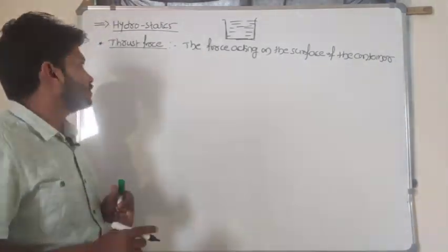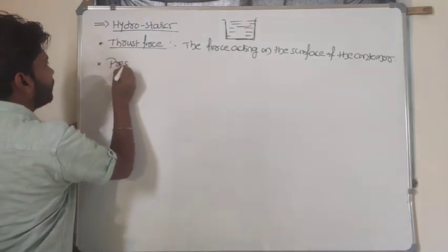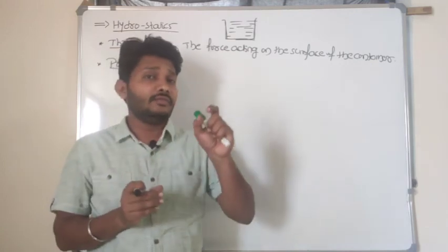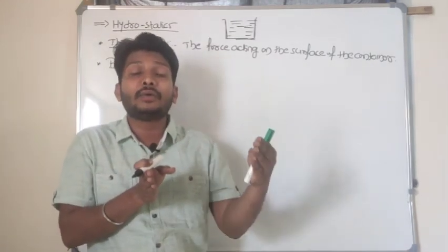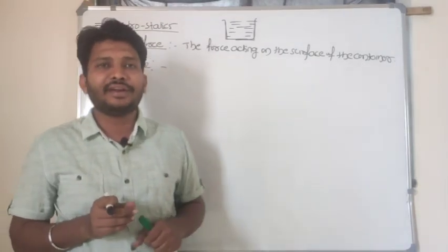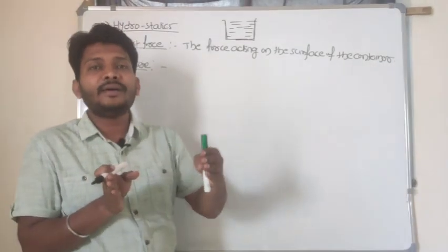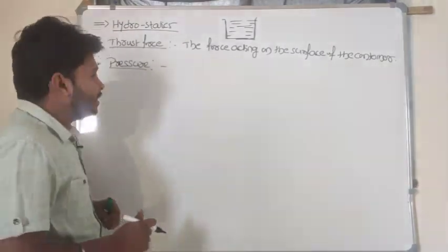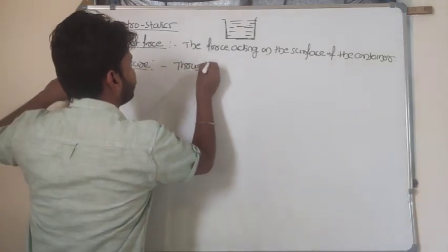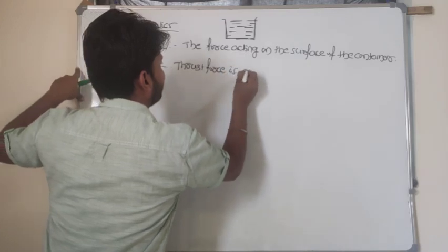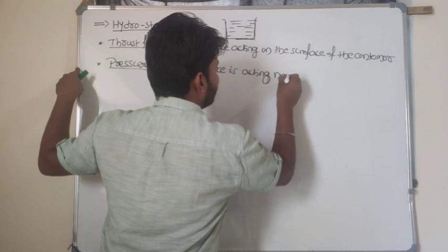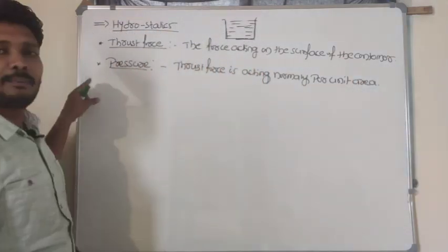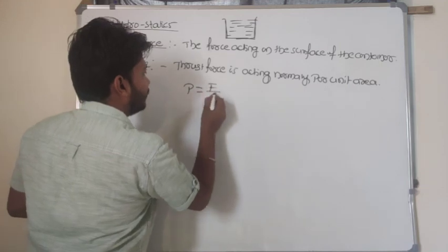Now we understand the meaning of pressure. Pressure means thrust force which is acting normally — that is, perpendicularly — per unit area. The word 'normal' means perpendicular. The thrust force acting normally to the given area is called pressure. So pressure is nothing but the ratio of force per unit area.